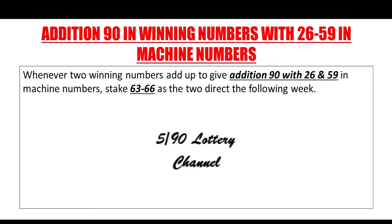The instruction says: whenever two winning numbers add up to give Addition 90, with 26 and 59 in machine numbers, stick 63 and 66 as the two direct or two sure the following week.